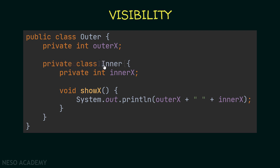We can also use the private access modifier on inner classes — this is one of the special things about inner classes, since we normally cannot use private on top-level classes. With a private inner class, we cannot create inner objects outside the outer class; they can only be created inside the outer class, just like a private variable.